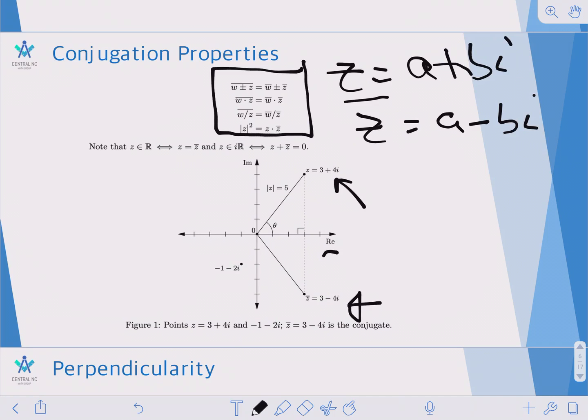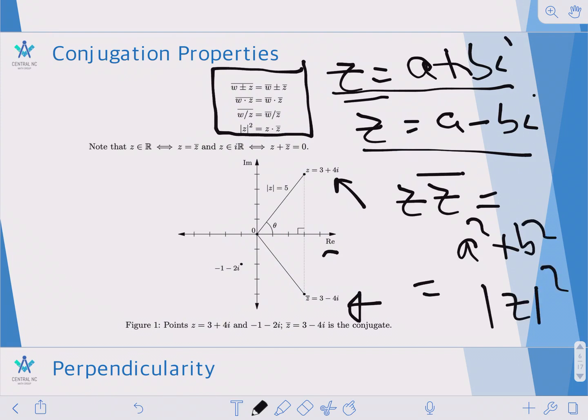An important fact is that the magnitude of a complex number squared is equal to a complex number times its conjugate. And you can verify that simply by multiplying these two equations. What you get is z times the conjugate of z equals a squared plus b squared, which is equal to the magnitude of z squared. We'll be using these two facts a lot throughout the next part of this series.